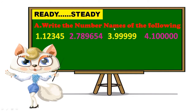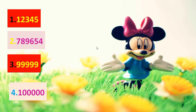First of all, see here the place values: 1s, 10s, 100s, 1000s, 10,000s. How we can write these number names? See here — the first one: ones, tens, hundreds, thousands, ten thousands.